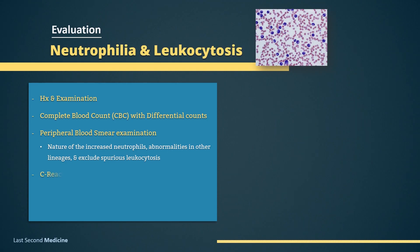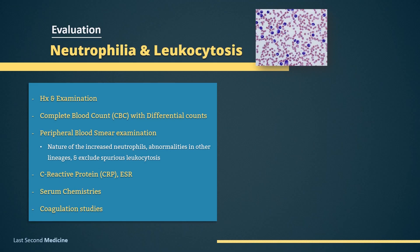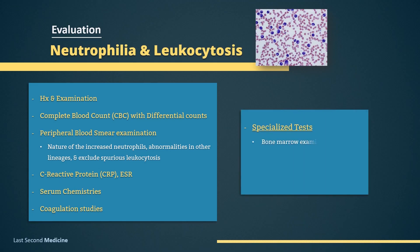Other laboratory studies such as nonspecific inflammatory markers — C-reactive protein and erythrocyte sedimentation rate — serum chemistries to evaluate associated conditions or complications, and coagulation studies to assess possible disseminated intravascular coagulation may all be helpful in some patients. Specialized tests including bone marrow examination, flow cytometry, cytogenetics, and molecular studies may be critical for establishing certain diagnoses such as chronic myeloid leukemia and acute myeloid leukemia. These specialized tests are not done routinely, but their selection is guided by clinical findings and the differential diagnosis.